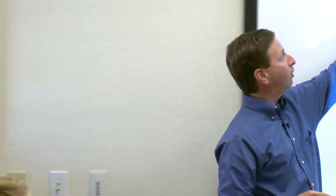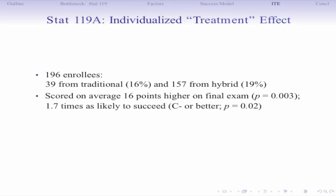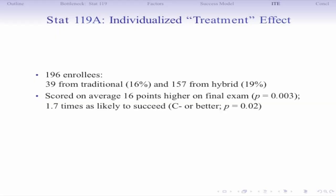STAT 119A is a voluntary one-unit recitation section. For this semester, the percentage of traditional and hybrid students in 119A was about the same, with about 200 students total enrolled. This recitation is run by GTAs doing directed problem solving and conceptual discussion to deal with harder statistics concepts. A base analysis found that students in 119A performed 16 points higher on the final exam on average — significant — and were 1.7 times more likely to succeed, meaning C-minus or better.